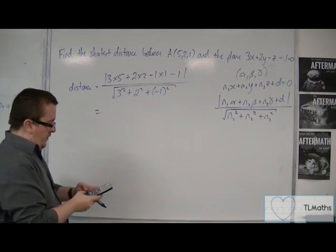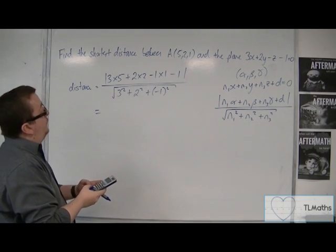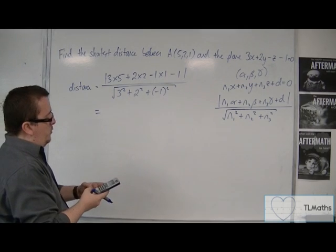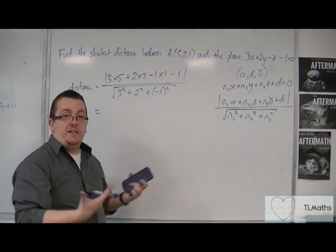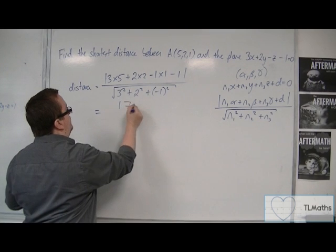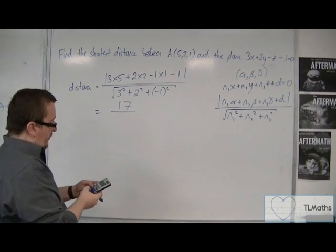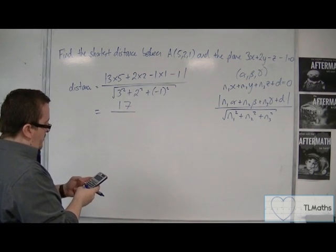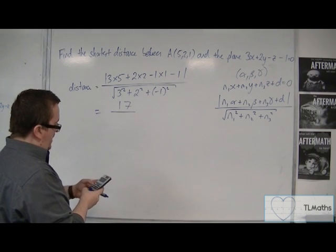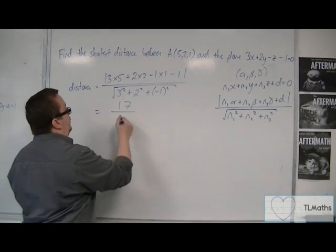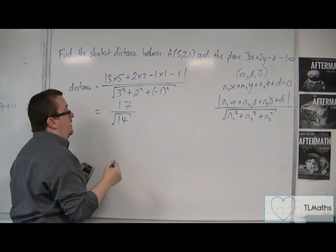So, on the top, we've got 3 times 5 plus 4 take away 1, take away 1, which is 17. The modulus of 17 is just 17, so that doesn't change. Over the square root, we've got 3 squared plus 2 squared plus 1 squared is 14. So, 17 over root 14.